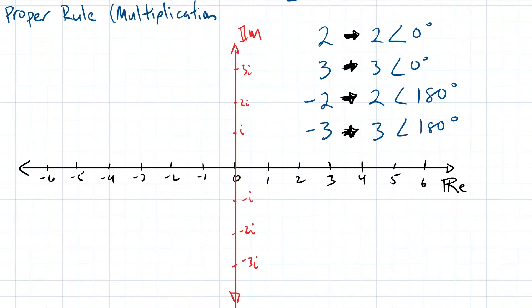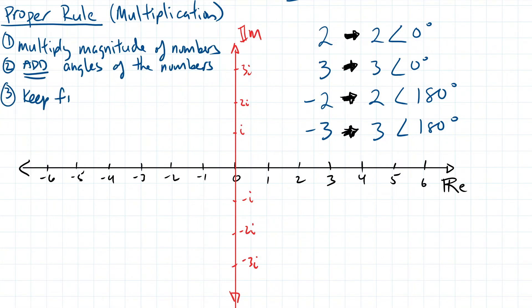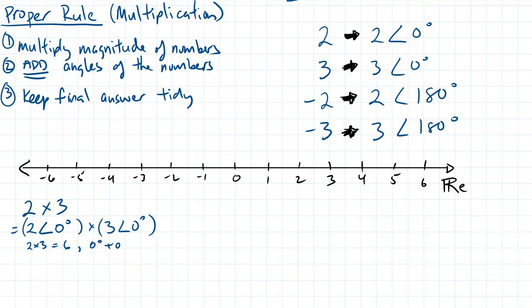So here's the proper rule for multiplying. Step 1, multiply the magnitude of the numbers. Step 2, add the angles of the numbers together. And step 3, show your final answer in a clean and organized manner. Let's revisit 2 times 3. First thing you do is multiply the magnitude of the numbers. In other words, the number without the angle. So 2 times 3 equals 6. Next, you add the angles. Since both 2 and 3 are positive, they both face right on the number line, making an angle of 0 degrees with the real axis. 0 degrees plus 0 degrees is equal to 0 degrees. So the final answer is 6 with a phase shift of 0 degrees, or just simply 6.